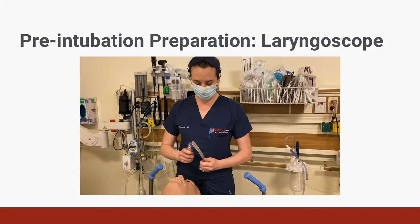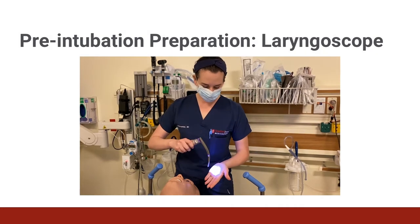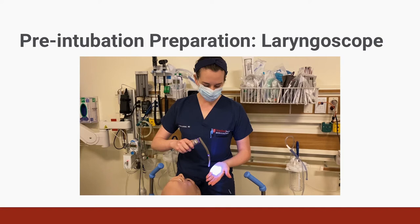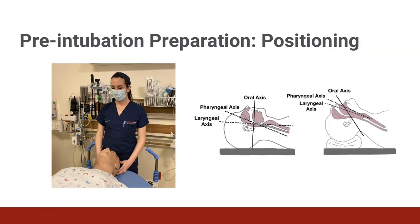In preparation for intubation, you will also need to assemble your blade and ensure that the light is functional. Positioning the patient prior to intubation will ensure best first pass success. The bed height should be raised to the intubating provider's comfort, typically between the lower rib margin and mid-chest. The patient should be positioned to achieve the best view to the glottis by aligning the three axes of the airway: the oral, pharyngeal, and laryngeal.